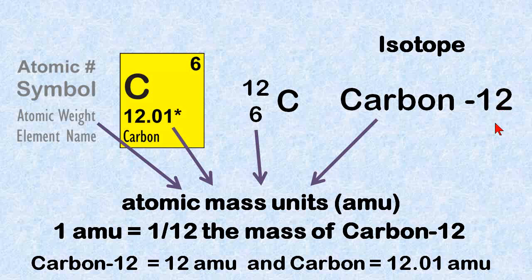is one AMU is one-twelfth the mass of carbon-12. That's kind of a hard way to remember it. If you remember that carbon-12 has a combined number of six protons and six neutrons in its nucleus, there's 12 of these little subatomic particles. You divide them by 12 and you get one apiece and that's one AMU. Carbon-12 is equal to 12 AMU. And carbon here is equal to 12.01 AMU. And that's how atomic mass units are defined.